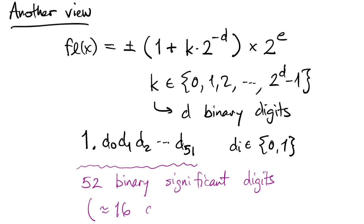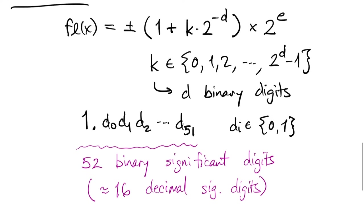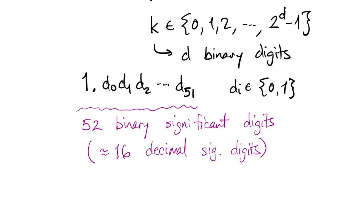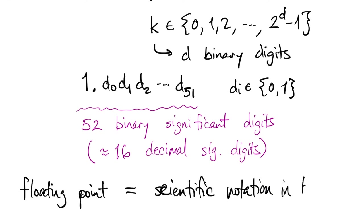Actually, it should be 53, because of that leading 1. And again, that's roughly equivalent to 16 decimal significant digits. When you get down to it, floating point representation is just scientific notation for numbers expressed in binary form.